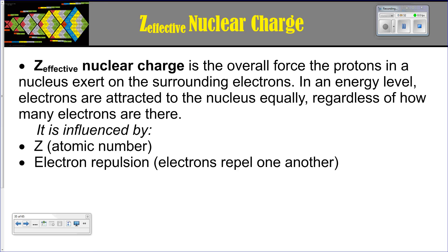The first phenomenon is Z effective nuclear charge. Breaking it down, nuclear charge is essentially the charge of the nucleus. Inside your nucleus you've got your neutrons and your protons. Neutrons are neutral, therefore the protons are the only thing affecting the positive charge of the nucleus. Z effective nuclear charge is the pull and the attraction that those protons are going to have on the surrounding electron cloud and the electrons in it. By definition, it's the overall force the protons in a nucleus exert on the surrounding electrons.